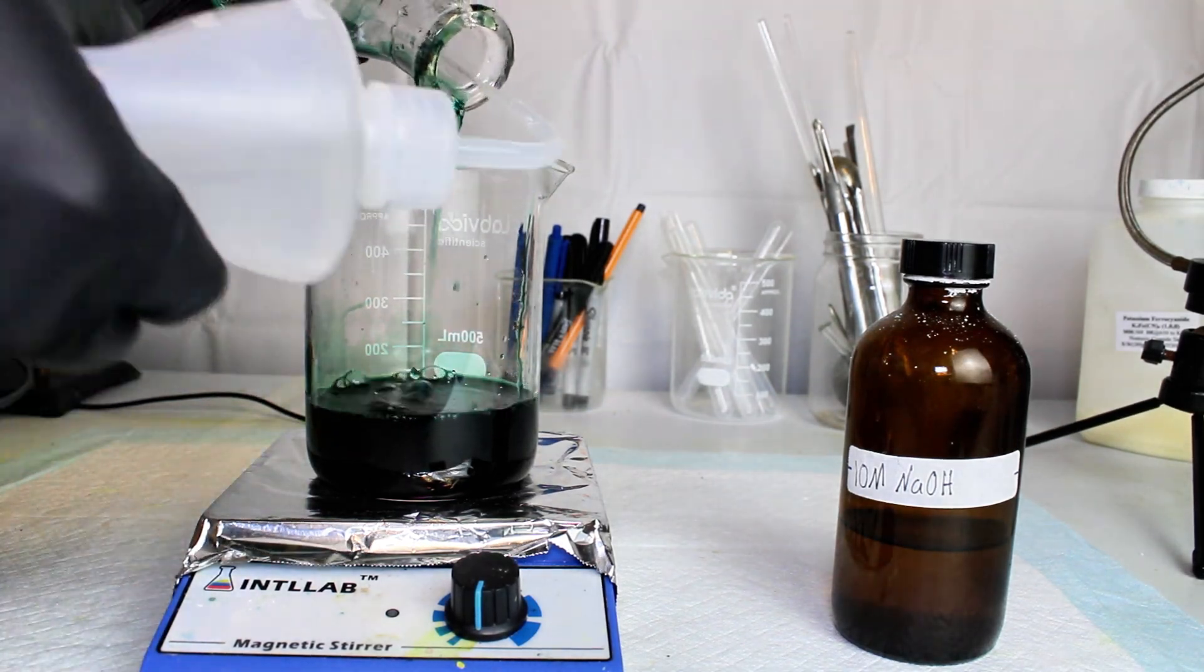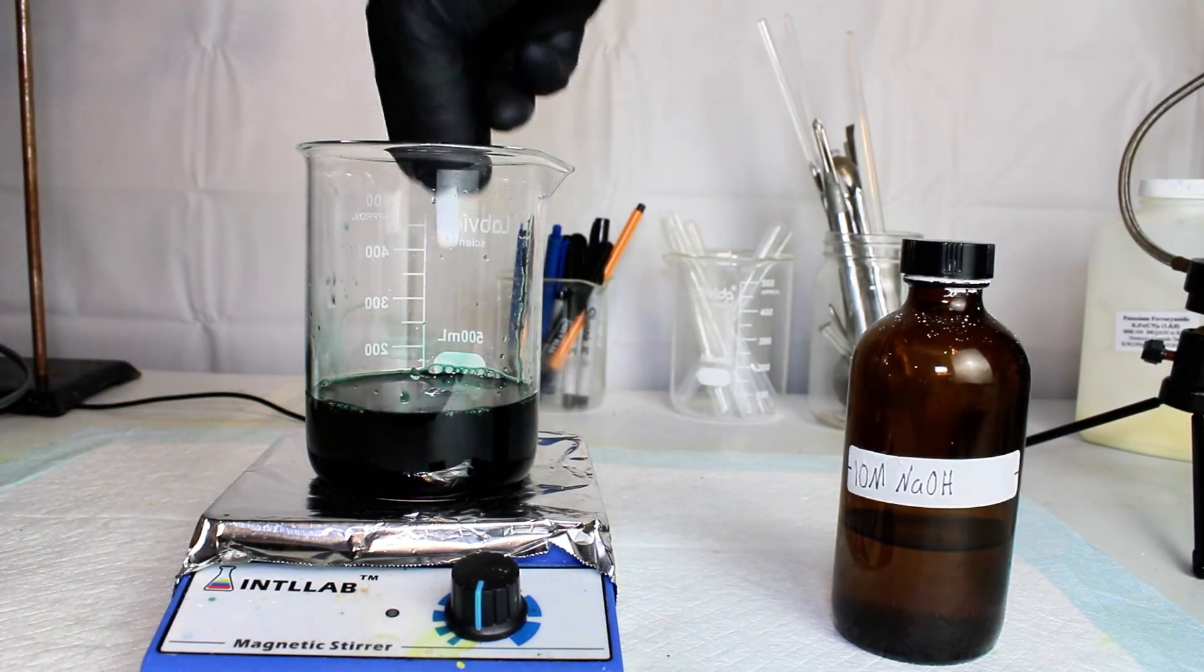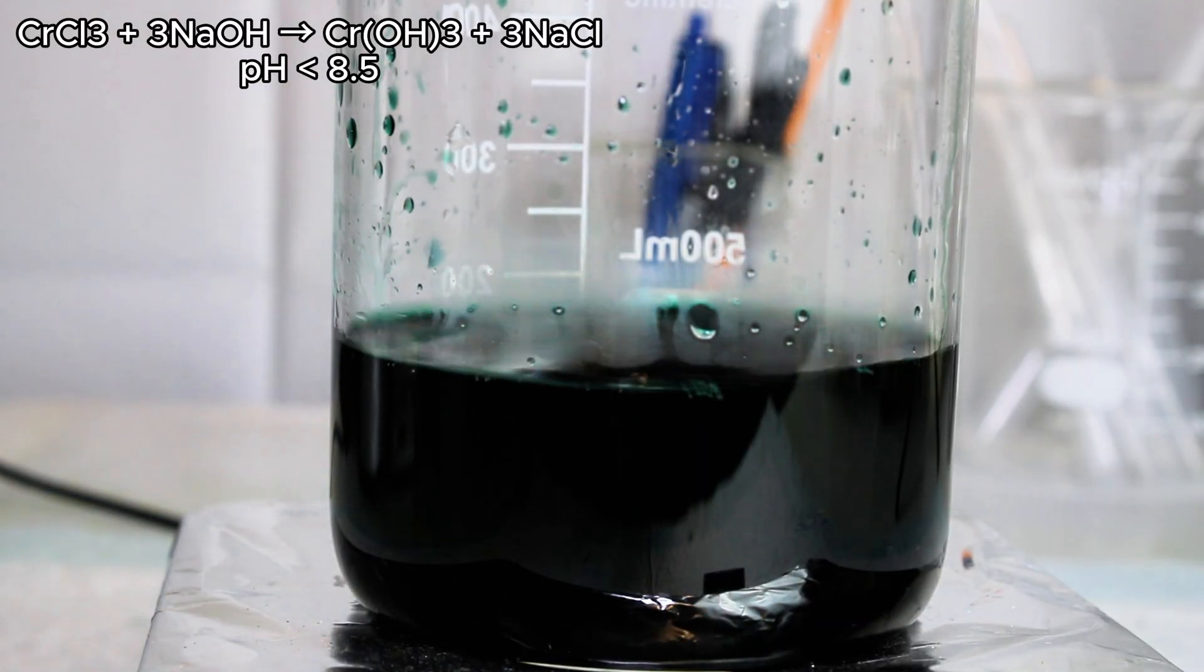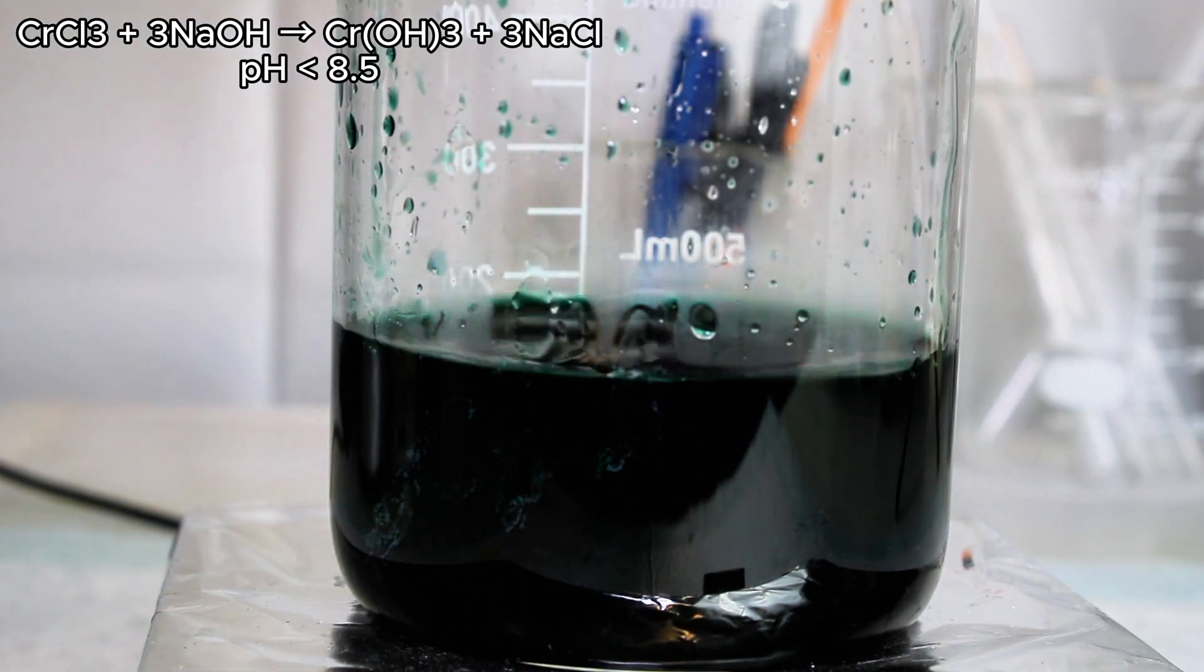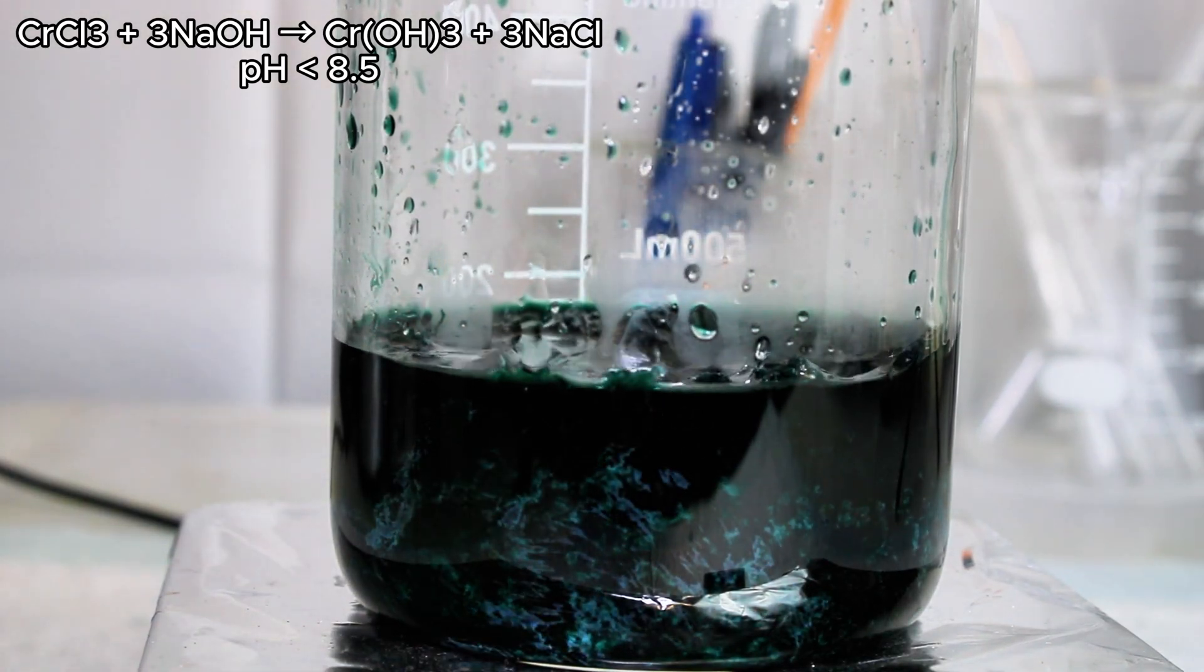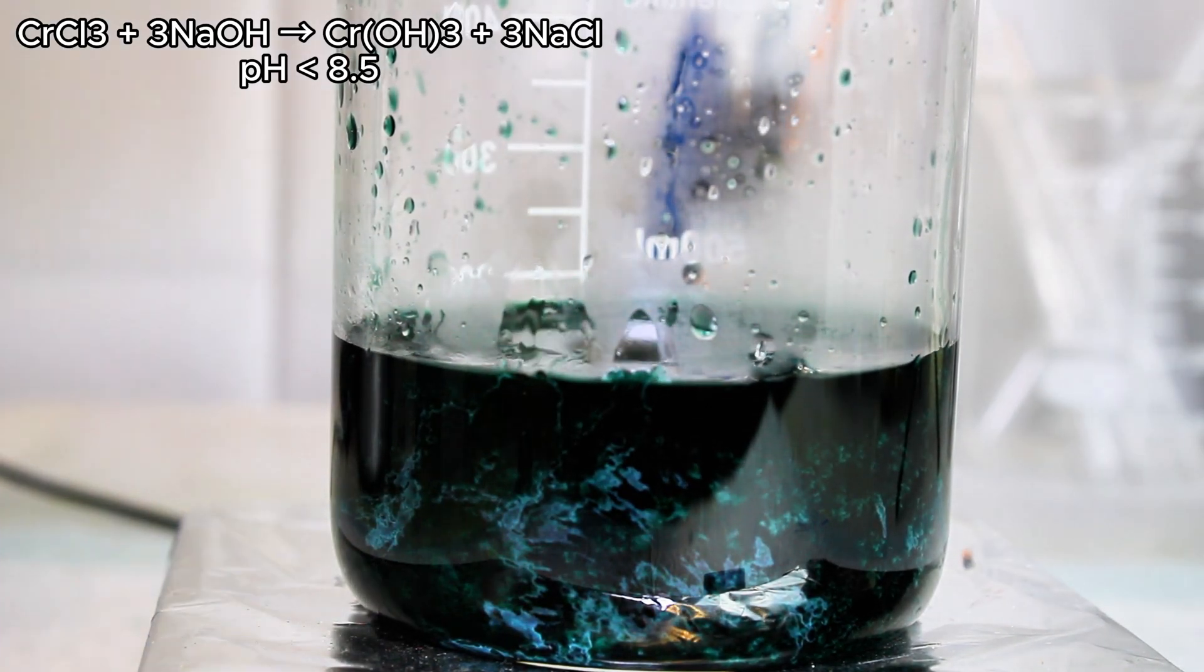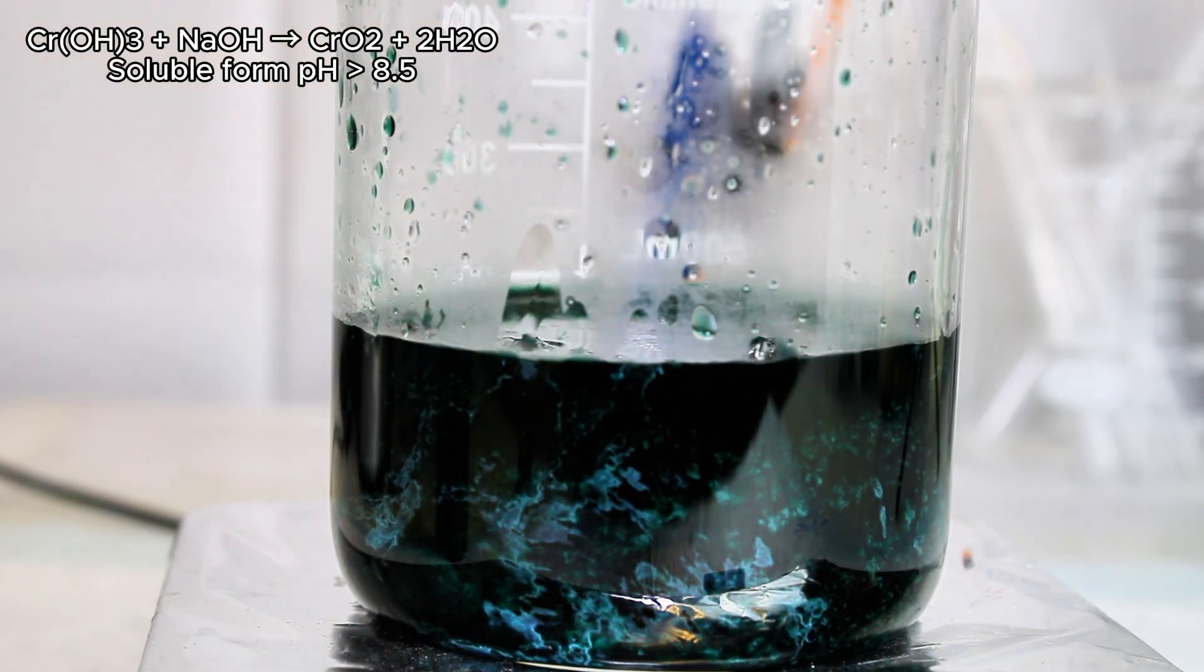The next step was to neutralize the chromium chloride with sodium hydroxide to precipitate chromium hydroxide, which is completely insoluble and can be filtered off. Now it is important here not to exceed a pH of around 8.5, as chromium is amphoteric and will redissolve in excess hydroxide.